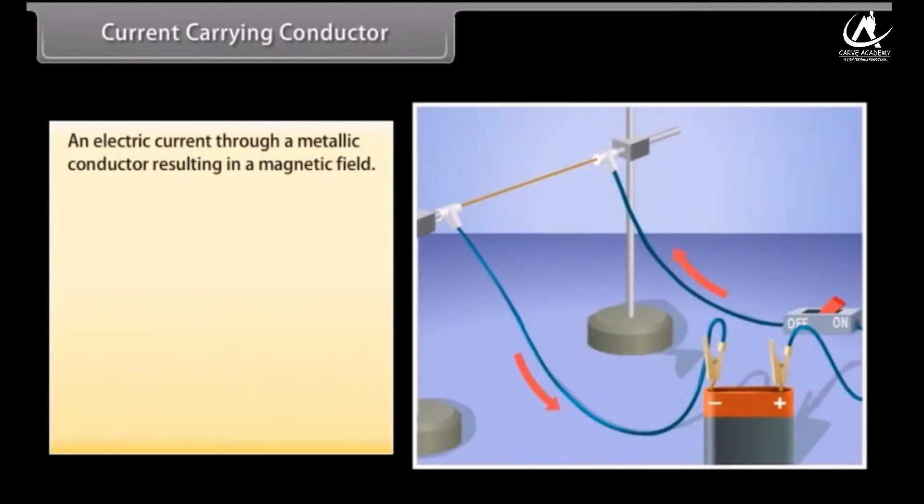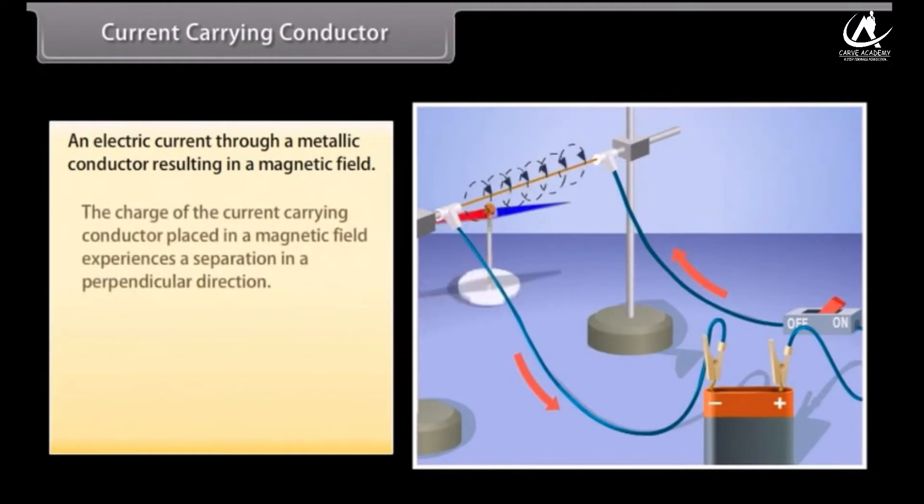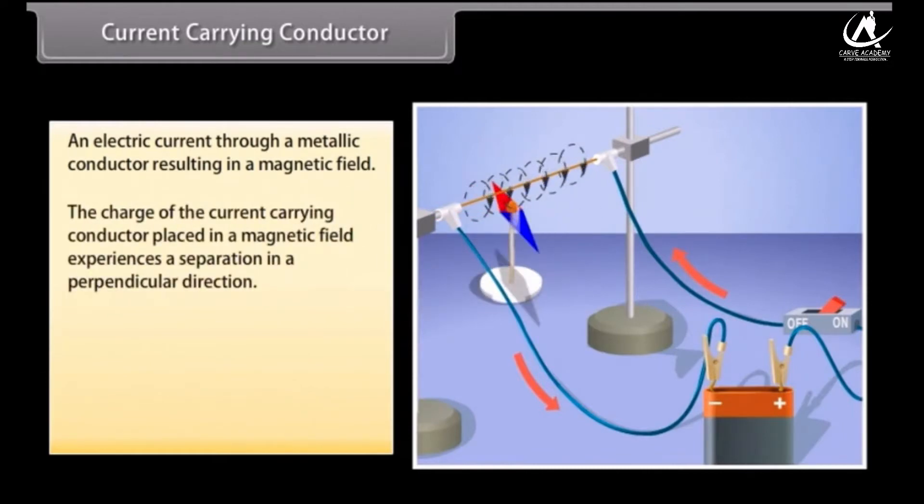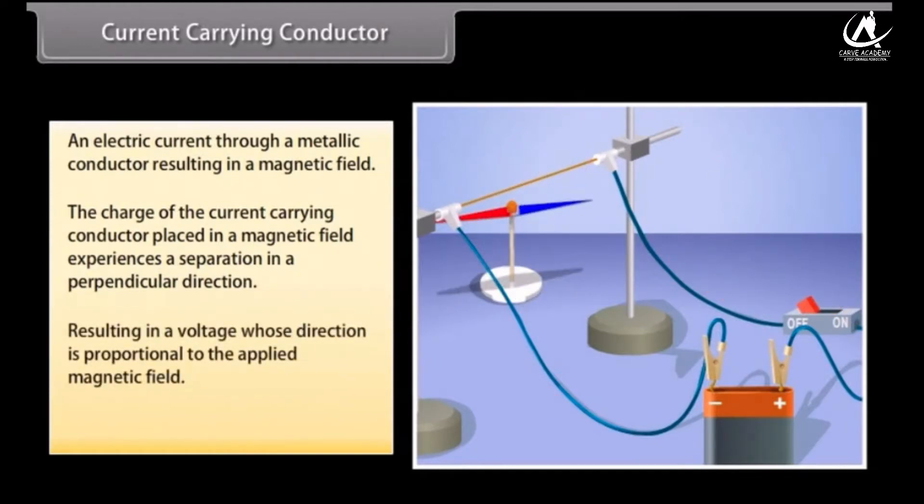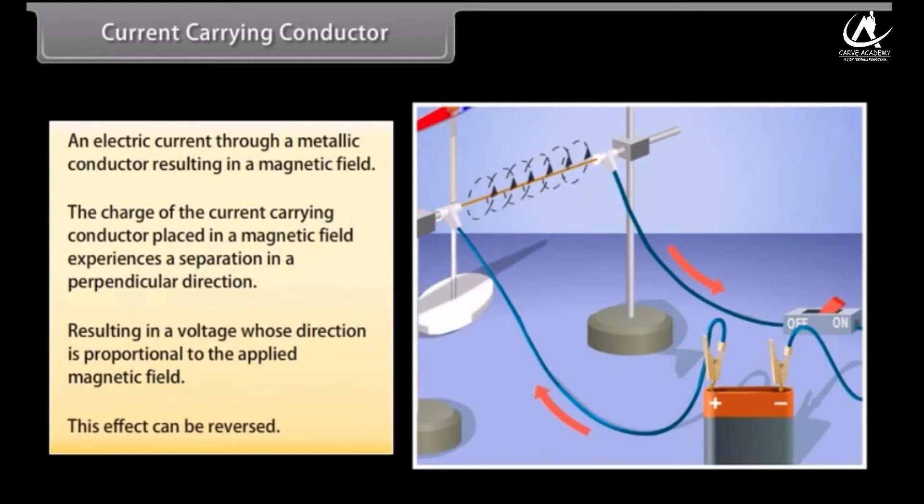Current-carrying conductor. An electric current passing through a metallic conductor results in a magnetic field being created around it. The charge of the current carrying conductor placed in a magnetic field experiences a separation in a direction that is perpendicular to the current and the magnetic field. This results in a voltage whose direction is proportional to the applied magnetic field. This effect can also be reversed.